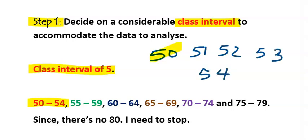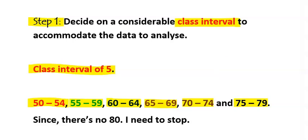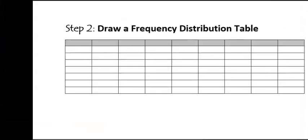Here we look at 50 to 54, which includes 50, 51, 52, 53, and 54 — a class interval of five. The next one will start from 55 to 59, then 60 to 64, 65 to 69, 70 to 74, and 75 to 79. Though the last number is 78, we still consider a class interval of five.